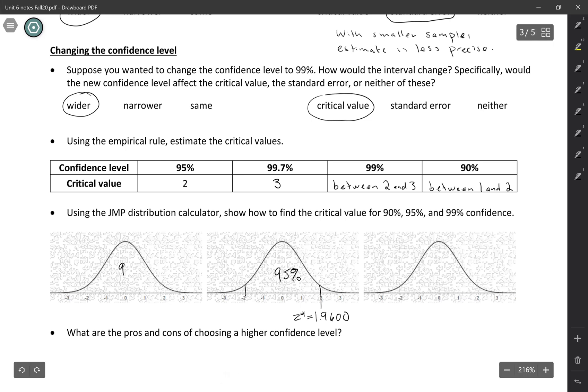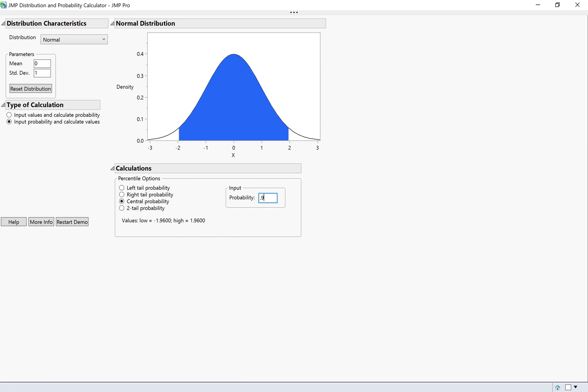So I'm going to do 90% in the middle, and I know it has to be somewhere between 1 and 2. Going back to JMP, I'm going to change my central probability to 0.9, and here I'm looking at the values again, and it's 1.6449.